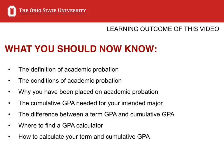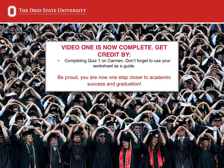Congratulations! You are at the end of Video 1. By this time, you should know the following: the definition of academic probation, the conditions of academic probation, why you have been placed on academic probation, the cumulative GPA necessary for your intended major, the difference between term and cumulative GPA, where to find a GPA calculator for short and long-term planning, and how to calculate your term and cumulative GPA. You should now have your worksheet filled out. Use it to complete Quiz 1 on Carmen now. The next section will require a bit of reflection and research on your part, so be sure to give yourself enough time to complete it. Thank you for taking the time to complete Video 1. You are now one step closer to academic success at The Ohio State University.